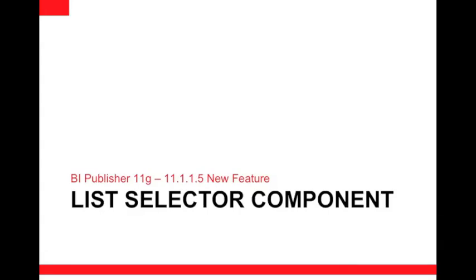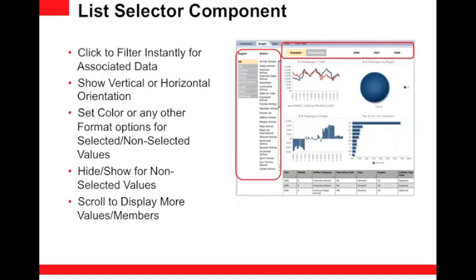Today we're covering the list selector component, which is one of five new features. This selector component allows you to click any value listed inside a list-of-values box to filter instantly for associated data within the same report.